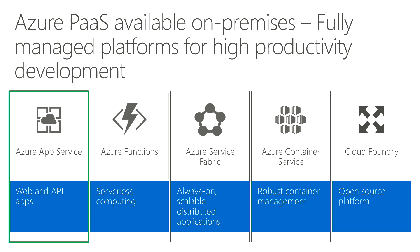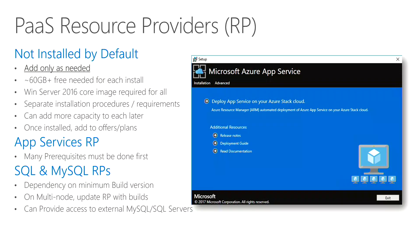We're focusing on the Azure App Service, and I just want to talk about the actual resource provider itself. It's not installed by default — add it only as you need it. Each one is going to consume approximately 60 gigabytes worth of space on your Azure Stack stamp. They all require Windows Server core images, and there are separate installation procedures and requirements for each one, some easier, some more difficult, but all very well documented on the Azure website.